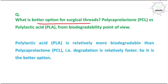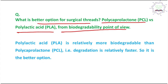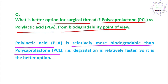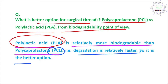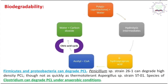Comparing PCL versus polylactic acid (PLA) for surgical sutures: from a biodegradability standpoint, PLA is relatively more biodegradable than PCL, and its biodegradation is faster. Consequently, polylactic acid is a better thread material for surgical applications.